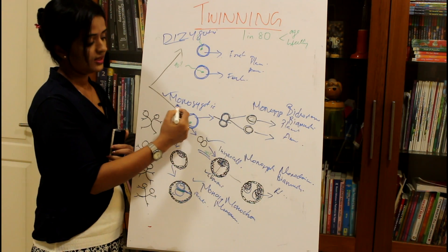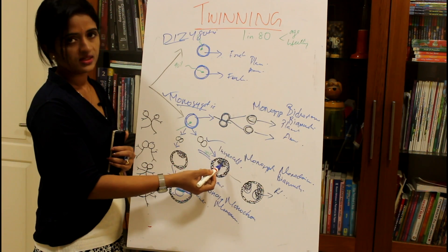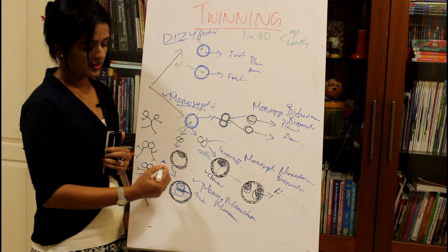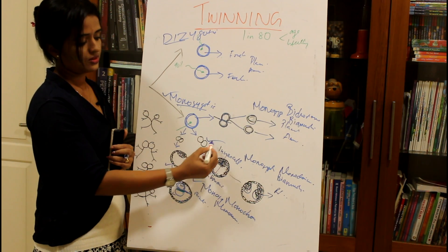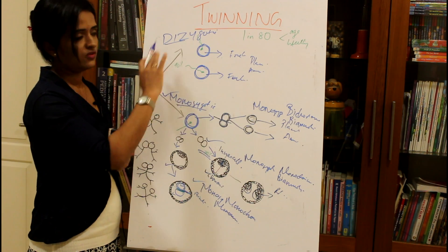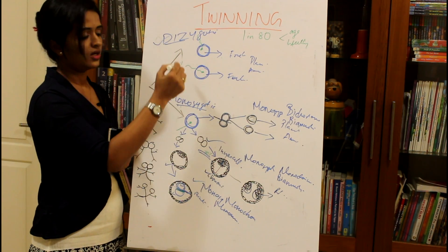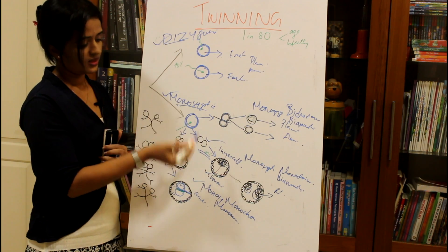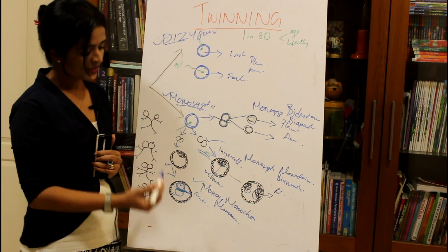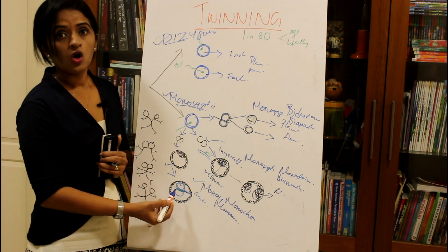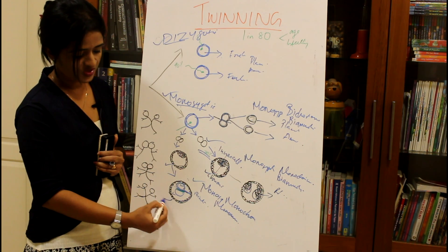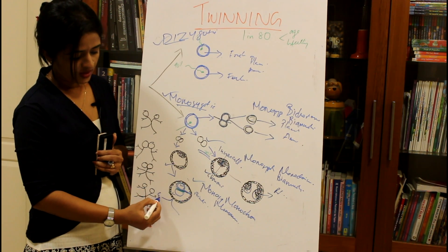The monozygotic monochorionic mono-amniotic variety is the most dangerous and is the most common form of monozygotic twins, occurring when separation happens at the inner cell mass level. However, when comparing all twins together, dizygotic twins occur more commonly than monozygotic twins overall.